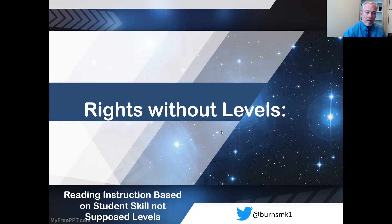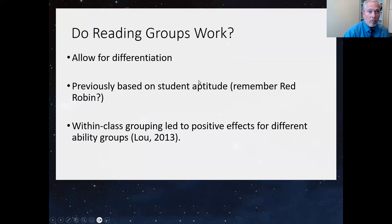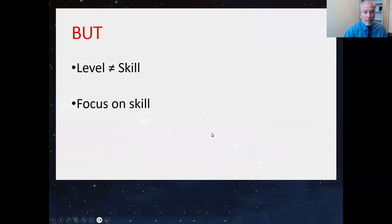So I thought I'd take a few minutes to do that briefly this morning. Talk about rights without levels. What does it mean to have reading instruction with small groups that are not based on reading levels, but based on student skill? First of all, reading small groups are very important. They allow for differentiation with a long history, but sometimes they get a negative perception. But within class grouping, you can see positive effects for kids with different levels of ability, reading ability and reading skill. But they cannot be based on level. Level does not equal skill.